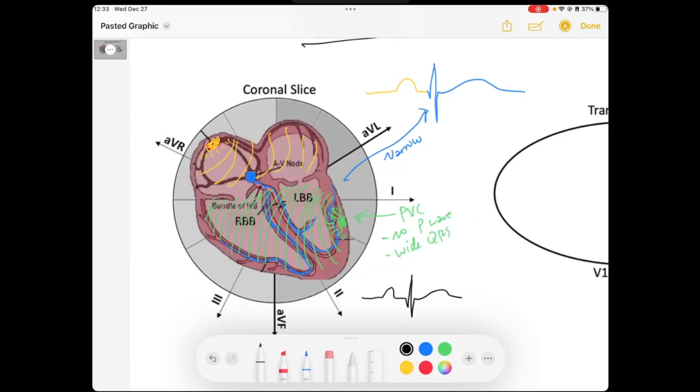And then you have an early beat that is this wide complex QRS. And then we've kind of got this funky looking T wave. And so this is our wide QRS PVC.